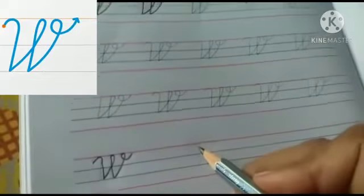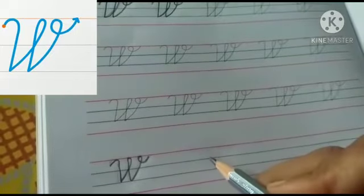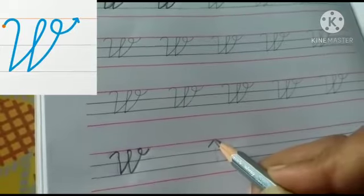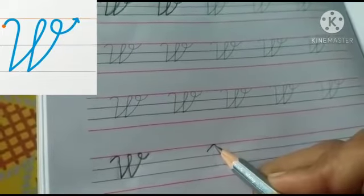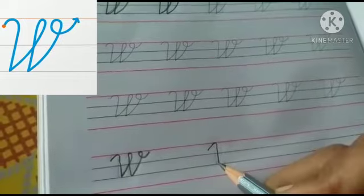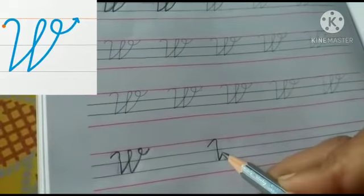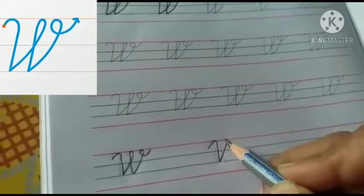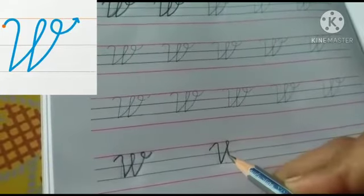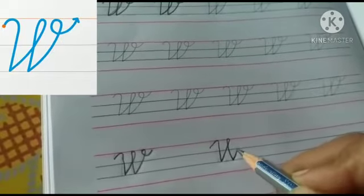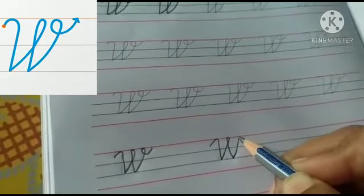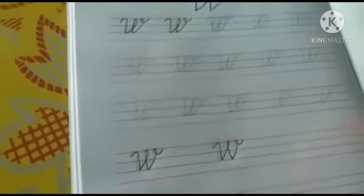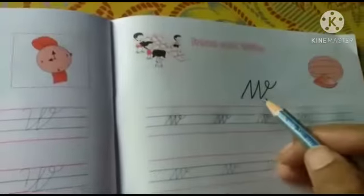Again practice. Put your pencil point between the first and second line. Go up with a slant line, make a small circle, come down with a straight line. Go up with a slant line till the top line, make a loop, come down. Again go up with a slant line till the top line, make a loop, and come out with a tail. This is W. Now next letter is small cursive W.